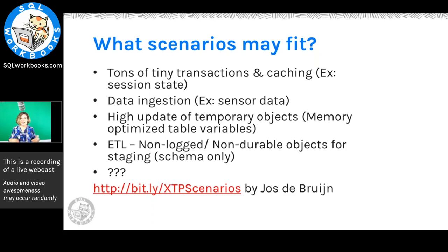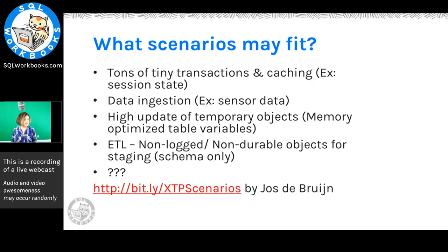A question from John: does the 32 GB quota affect the buffer pool limit in SQL Server Standard? The quota for in-memory OLTP is a per-database quota. Going off memory, I believe it is outside the buffer pool limit. The blog post linked on screen — the XTP scenarios post — talks about those limits more. Ned, please correct me if I'm wrong, but I believe it is a per-database limit and it is outside of the buffer pool limit.